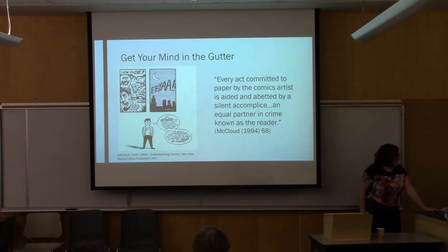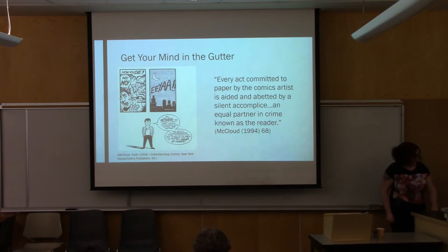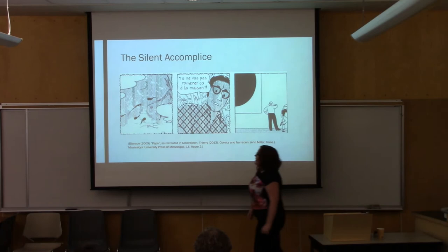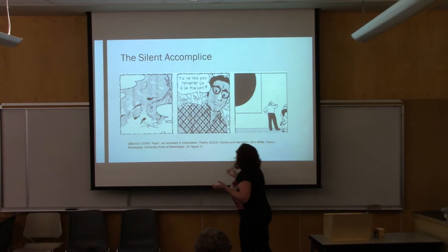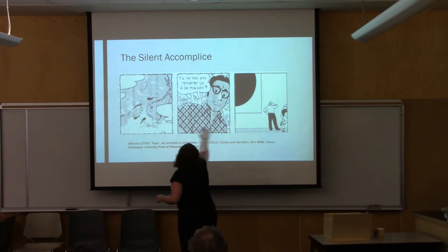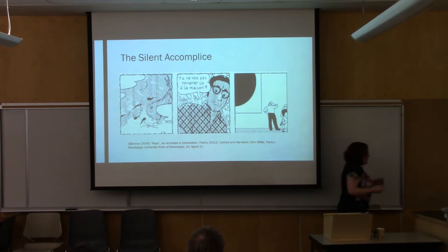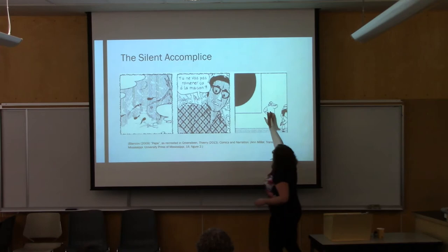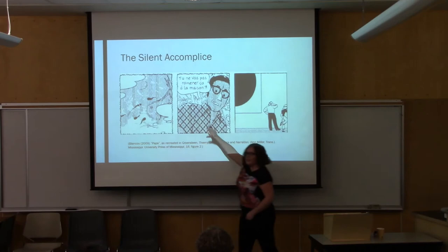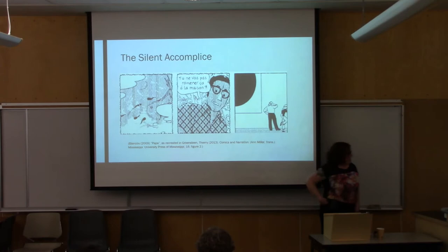McLeod goes on to write that every act committed to paper by the comics artist is aided and abetted by a silent accomplice — an equal partner in crime known as the reader. When we look at an abstract comic like this, we really see how this works. Abstract comics essentially approach the task as one of reader-created meaning. They produce a series of images that may not apparently be related, but the fact that they're put in sequence means the reader will approach them as though they are related and will pull out meaning, similar images, similar ideas. A lot of people think this man and this man are the same; others have suggested the big image is a tadpole and this is an inspiration story. But the meaning here is left up to the reader.